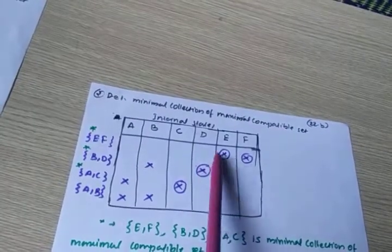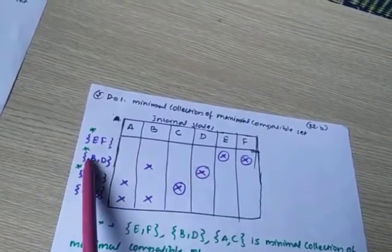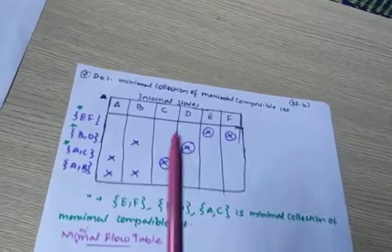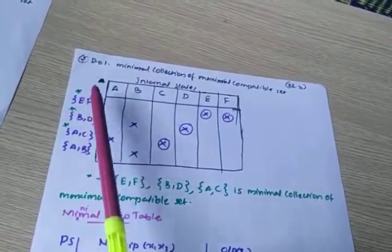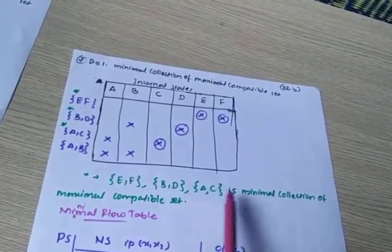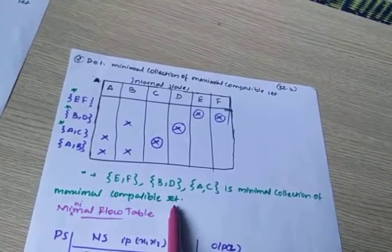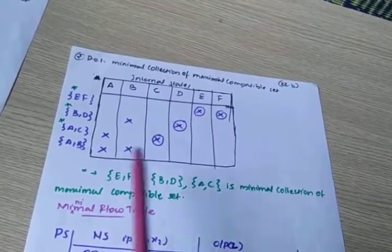The circled columns' corresponding rows are marked with a star. You take only the star-signed sets; the others can be eliminated. So the result is: {E,F}, {B,D}, {A,C}. This is the minimal collection of maximal compatible sets — {E,F}, {B,D}, {A,C} — and we eliminate {A,B}.